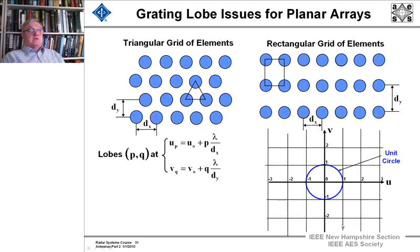I'm going to leave up a triangular grid of elements, because I'm going to point out later that you can more efficiently save elements. I think it's 17 or 18 percent fewer if you space your elements triangularly. But we're going to deal with looking at the rectangular grid of elements, where these blue circles represent where an element is physically, and that's in the v-u plane, as we look down on it. And in that v-u plane,